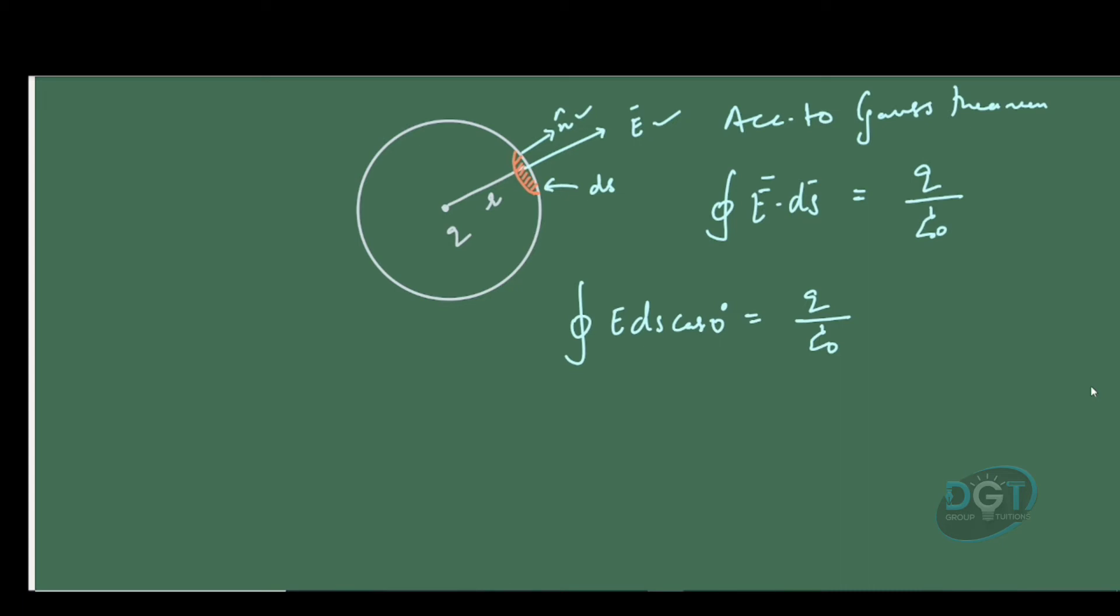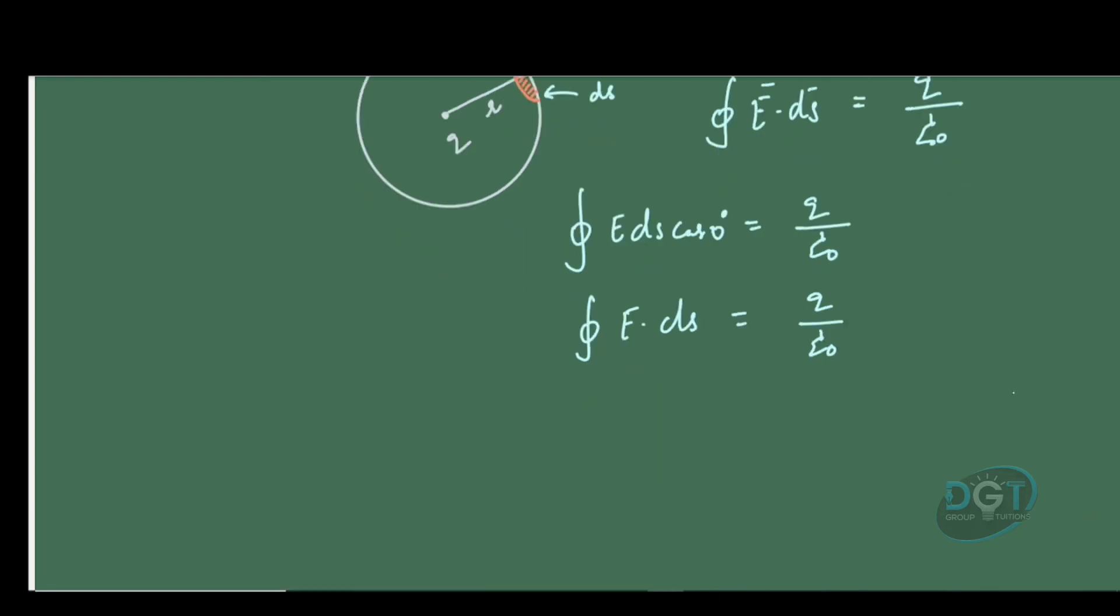We can take E outside the integration symbol, giving us E times the surface integral of ds equals q/ε₀.